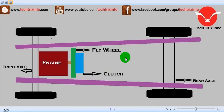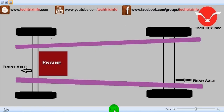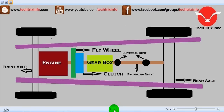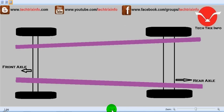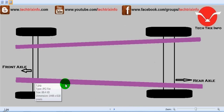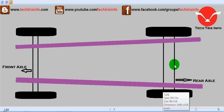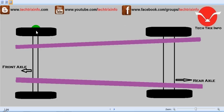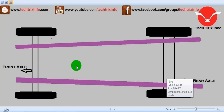Today we'll be learning about the complete transmission system of an automobile. On the screen you have an animation showing the layout of the complete transmission system. This is the chassis with the front axle and the rear axle — the front right-side and left-side wheels, and the rear right-hand side and left-hand side wheels.